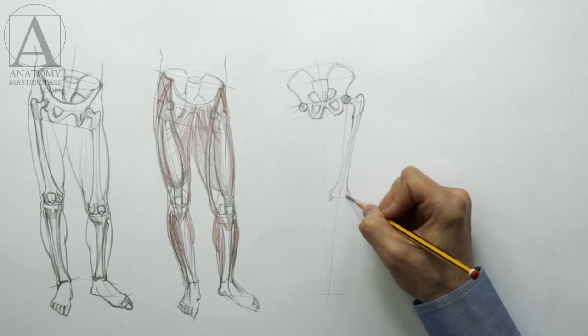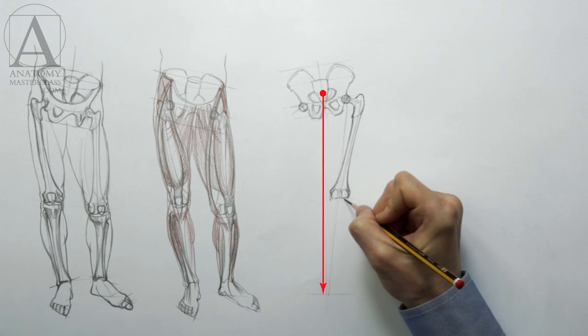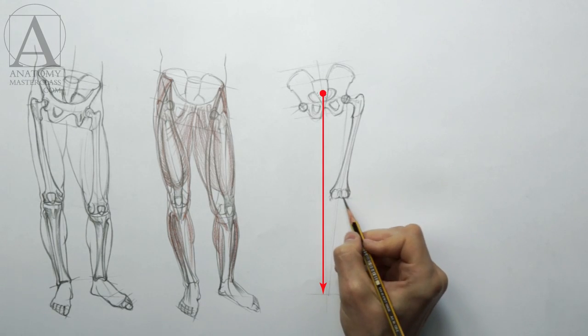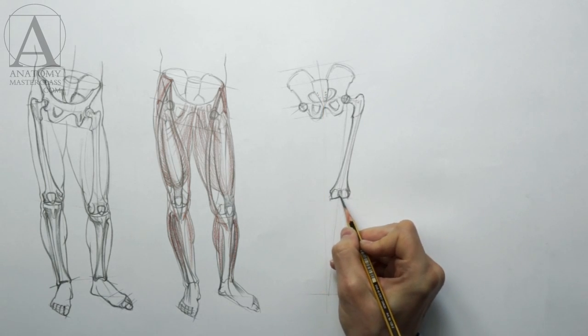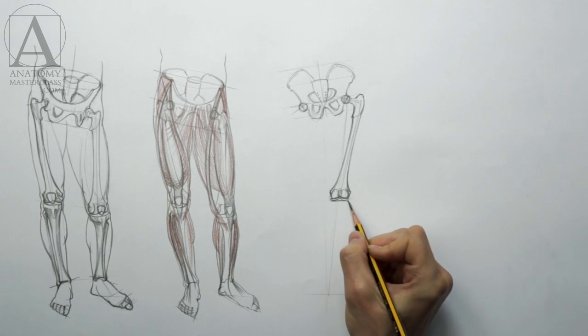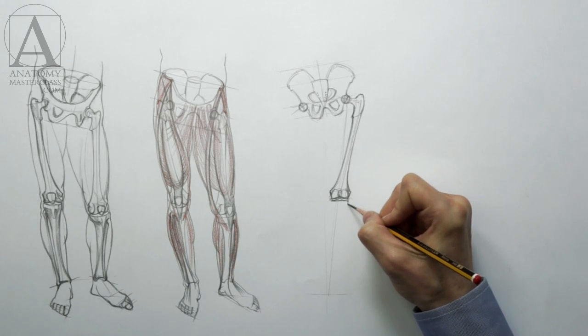In the contrapposto position, the center of gravity of the human body vertically projects onto the footprint of the supporting leg so that the whole weight of the body is supported by just one leg. Another leg helps keep the body balanced.